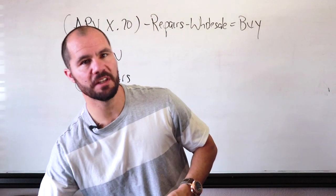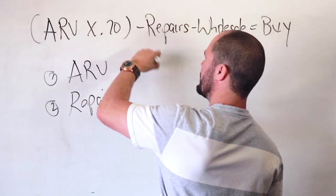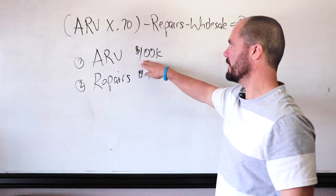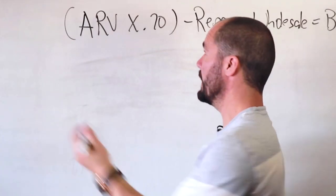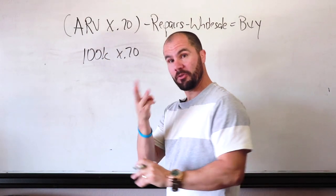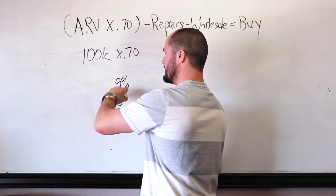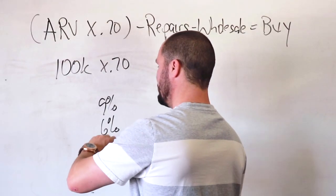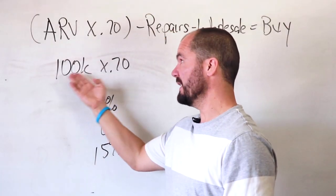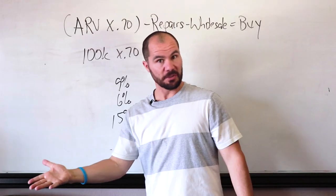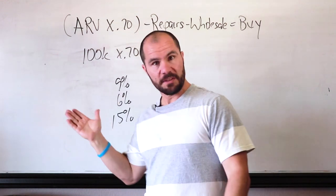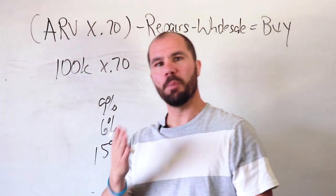Let's use an example. We're going to say our ARV is $100,000 and our repairs are $20,000. We take $100,000 ARV times 0.7. Why 70%? Because we factored in 9% for closing costs, 6% for carrying costs, and 15% for profit — those three things add up to 30%. So when you multiply ARV times 0.7, you're essentially taking 30% right off the top to cover closing costs, carrying costs, and profit.